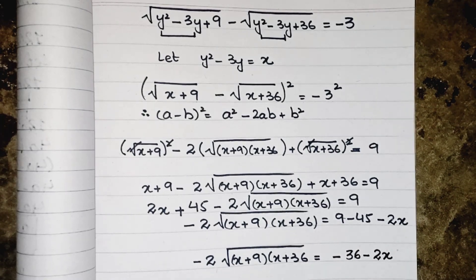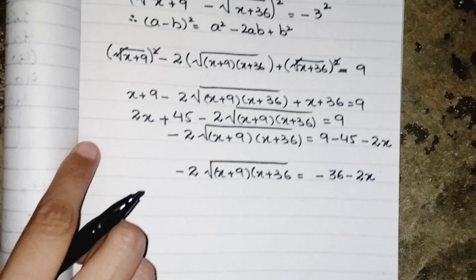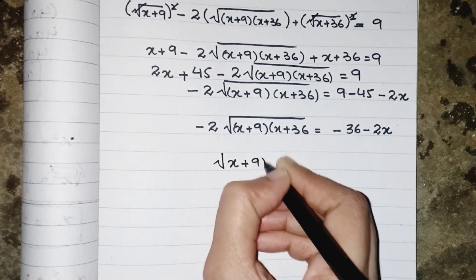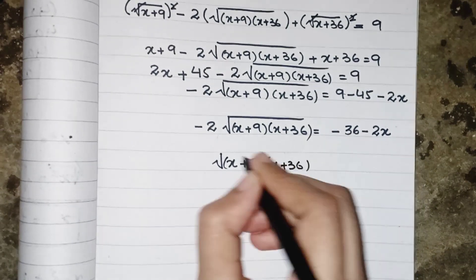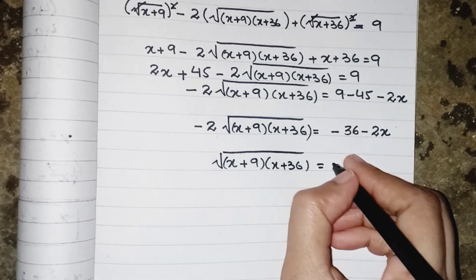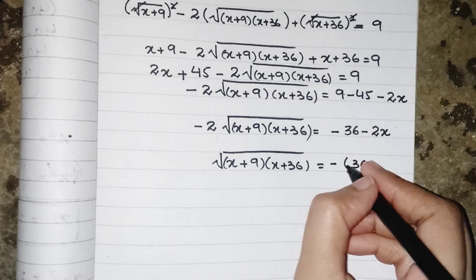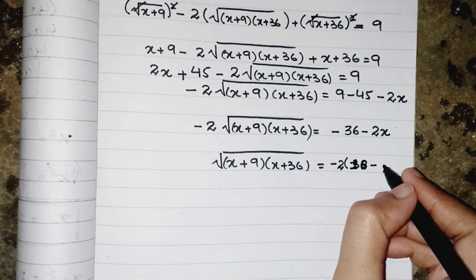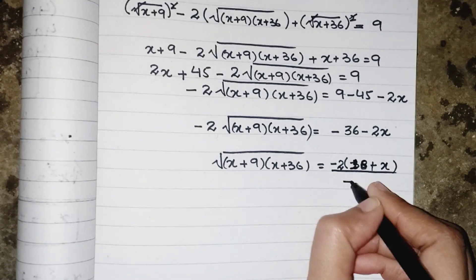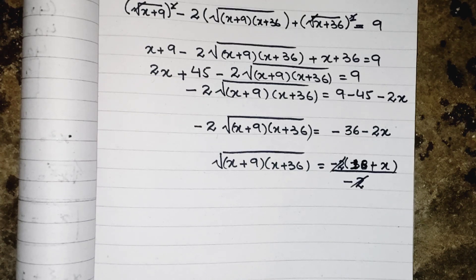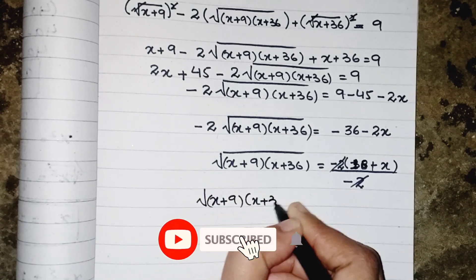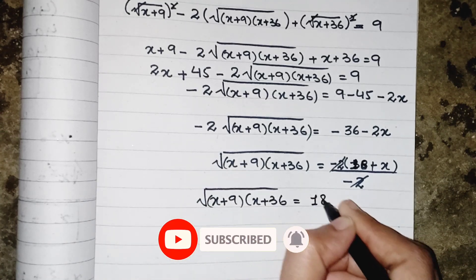This 2 is multiplying the whole root; when moved to the other side it divides. Taking minus sign as common, and then taking 2 as common from 36 and 2x, after cancellation the minus 2 and minus 2 cancel out. So we have: the square root of (x plus 9)(x plus 36) equals 18 minus x, which simplifies to 18 plus x.